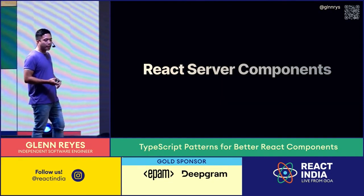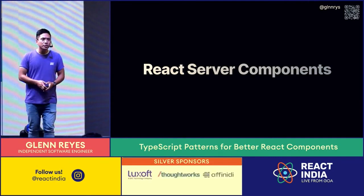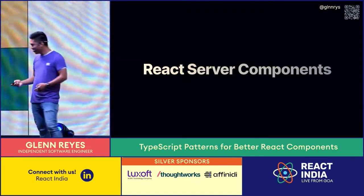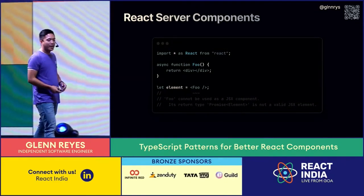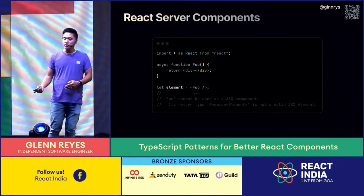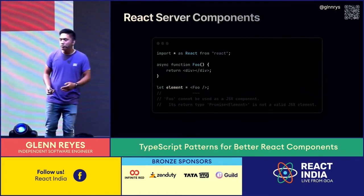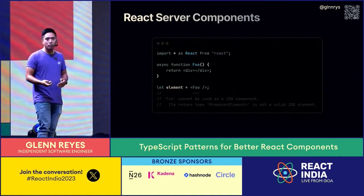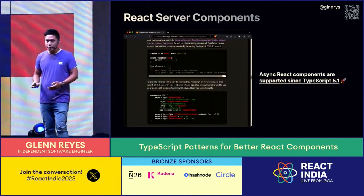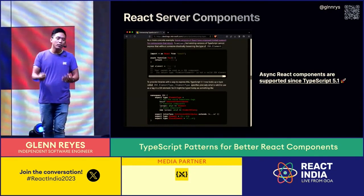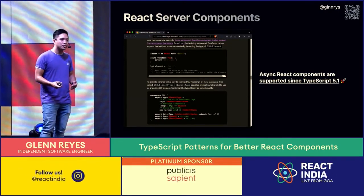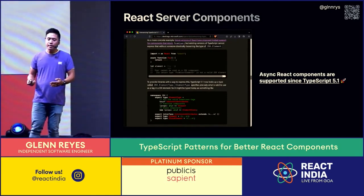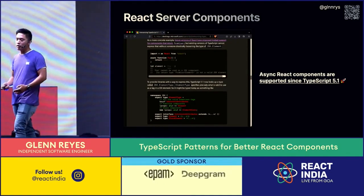Nowadays we're dealing a lot with React server components. These are components that run on the server and never get to the client. They can also be written as async, which means they include promises. They used to be incompatible with previous TypeScript versions, but since TypeScript 5.1, it's possible to have components returning a promise. If you're considering introducing React server components in your application, make sure you're at least on TypeScript 5.1 for full compatibility.